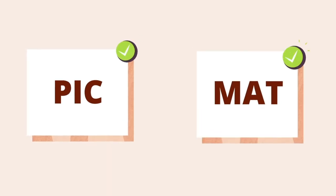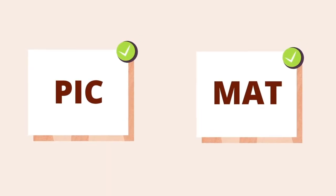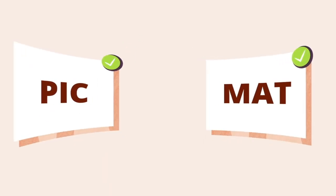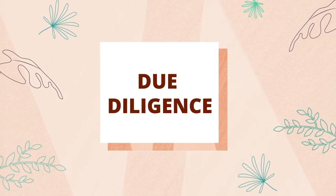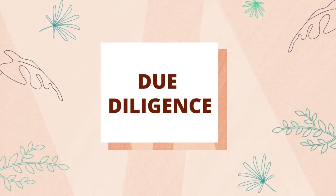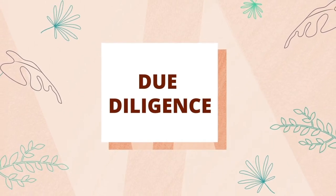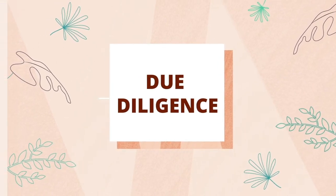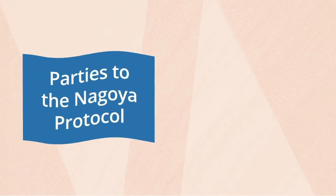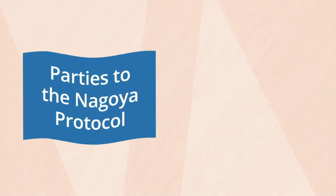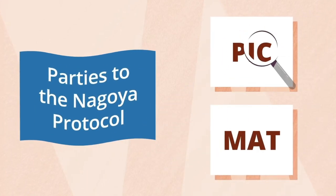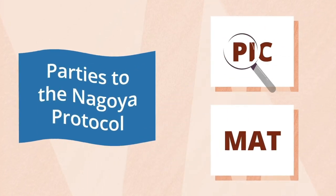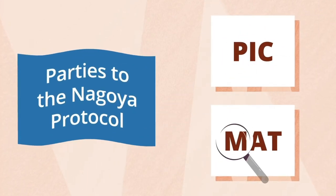Securing PIC and MAT allows the team to satisfy the requirement known as due diligence, in the country where the genetic resources or associated traditional knowledge are used. Countries that are parties to the Nagoya Protocol must ensure that such use is in compliance with the ABS laws of the country of origin.